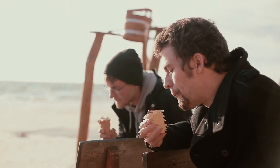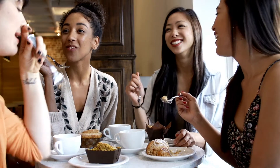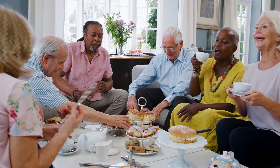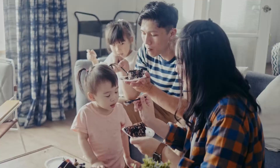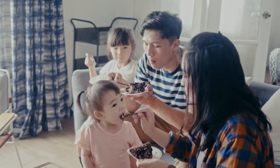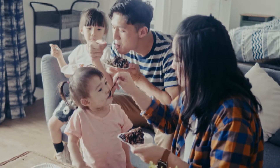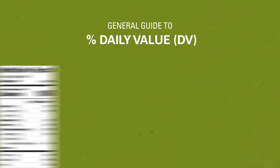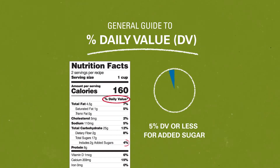If you consume a lot of calories from added sugars, it can be difficult to meet recommended levels of other important nutrients while staying within calorie recommendations. Therefore, choose foods most often that have a percent daily value of 5% or less for added sugar.